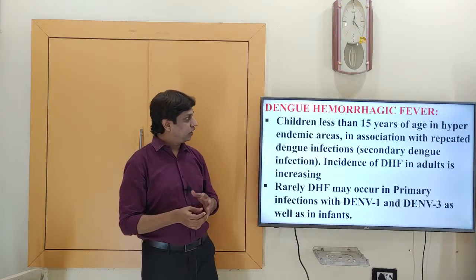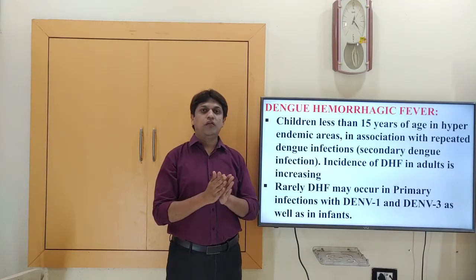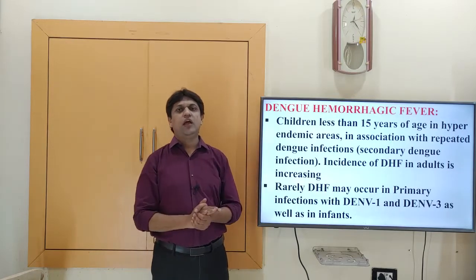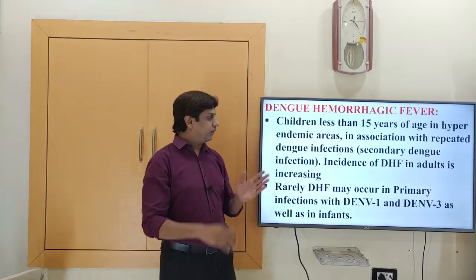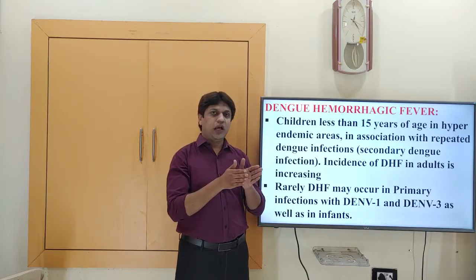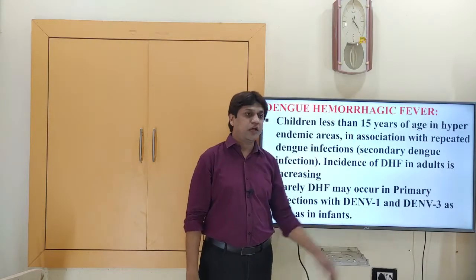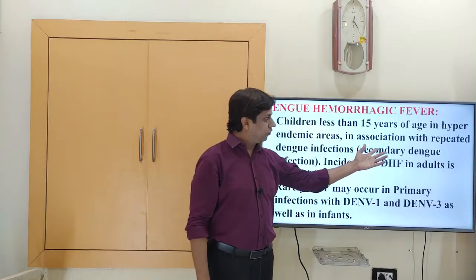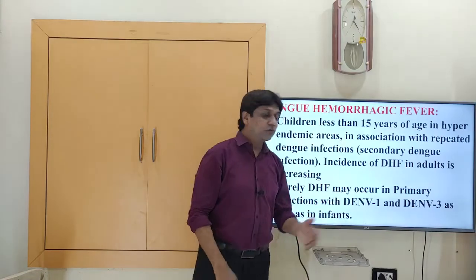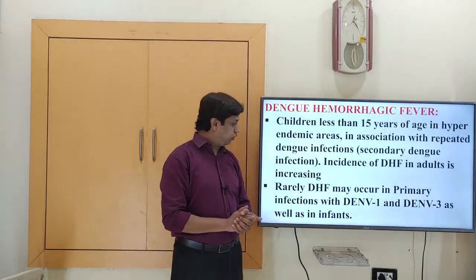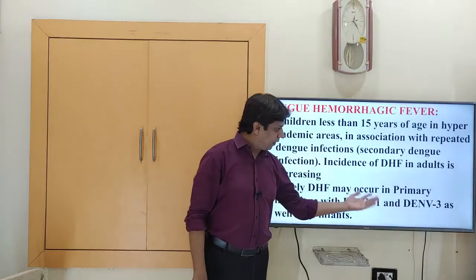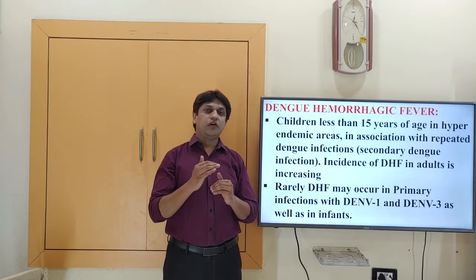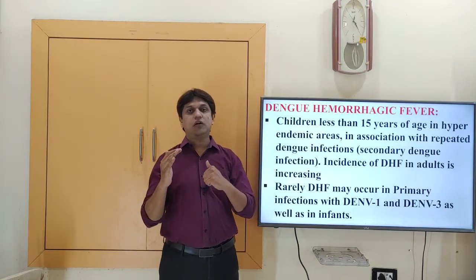Dengue hemorrhagic fever is actually a complication of Dengue infection. The majority of people have only the classical signs and symptoms, which subside on their own or with paracetamol. However, as seen in the pathogenesis, if a second serotype invades — particularly in children under 15 years in hyperendemic areas with repeated Dengue infection — it leads to a secondary Dengue infection causing Dengue hemorrhagic fever or Dengue shock syndrome. The incidence of Dengue hemorrhagic fever in adults is nowadays also increasing, and rarely it may occur as a primary infection.